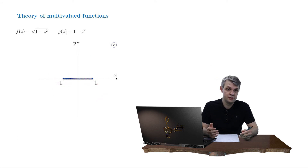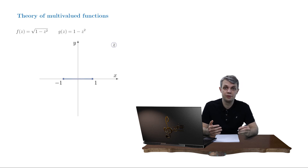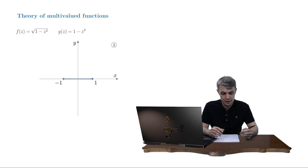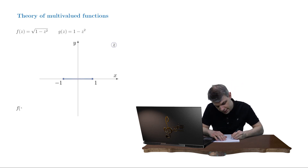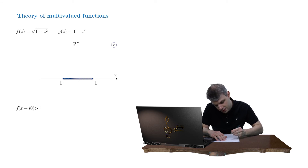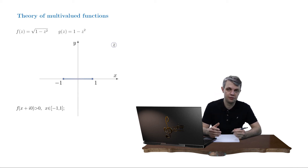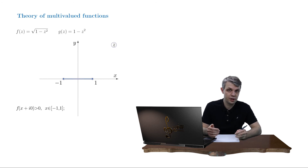A convenient and common choice is as follows. We assume that our function takes positive values on the upper bank of the branch cut — that is, f of x plus i0 is positive when x belongs to the segment from negative 1 to 1. This is the formal definition of our regular branch. Now let's find the value of our regular branch on the lower bank of the branch cut.